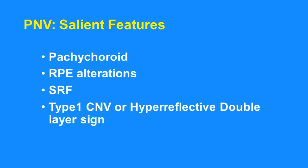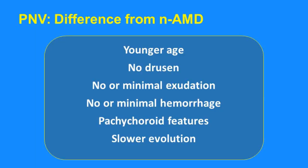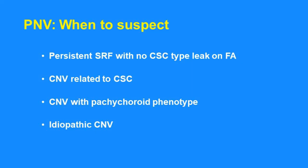To summarize, the salient features of PNV are: pachychoroid, RPE alterations, subretinal fluid, type 1 CNV or hyper-reflective double layer sign. The key differentiating points of pachychoroid neovasculopathy from typical neovascular AMD are: younger age at presentation, no drusen, no or minimal exudation, no or minimal hemorrhage, pachychoroid features, and slower evolution of the disease process.